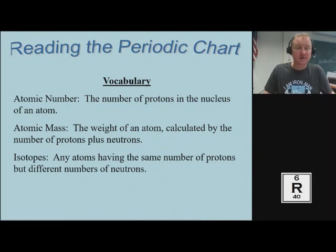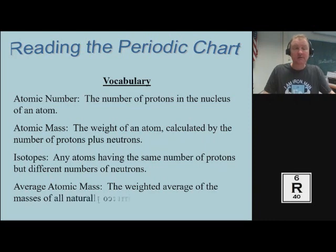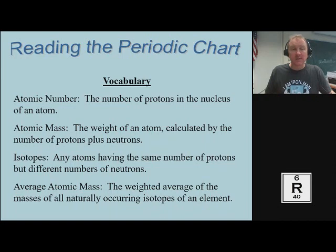The third concept is isotopes. Isotopes are atoms that have the same number of protons — which makes them the same element — but a different amount of neutrons. The final concept is average atomic mass: the weighted average of the masses of all naturally occurring isotopes of an element. I would highly suggest that you underline the word 'weighted,' and I'll explain why in a moment.